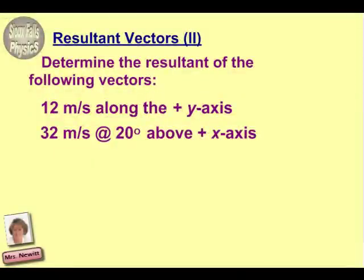Hey everyone, here's your Sioux Falls physics teacher, looking at a practice problem on resultant vectors. Here we have two vectors. Notice that these two vectors are representing velocities, so a vector could be a velocity, could be a displacement, could be a variety of things, but these are velocities: 12 meters per second along the y-axis, and 32 meters per second at 20 degrees above the x-axis.